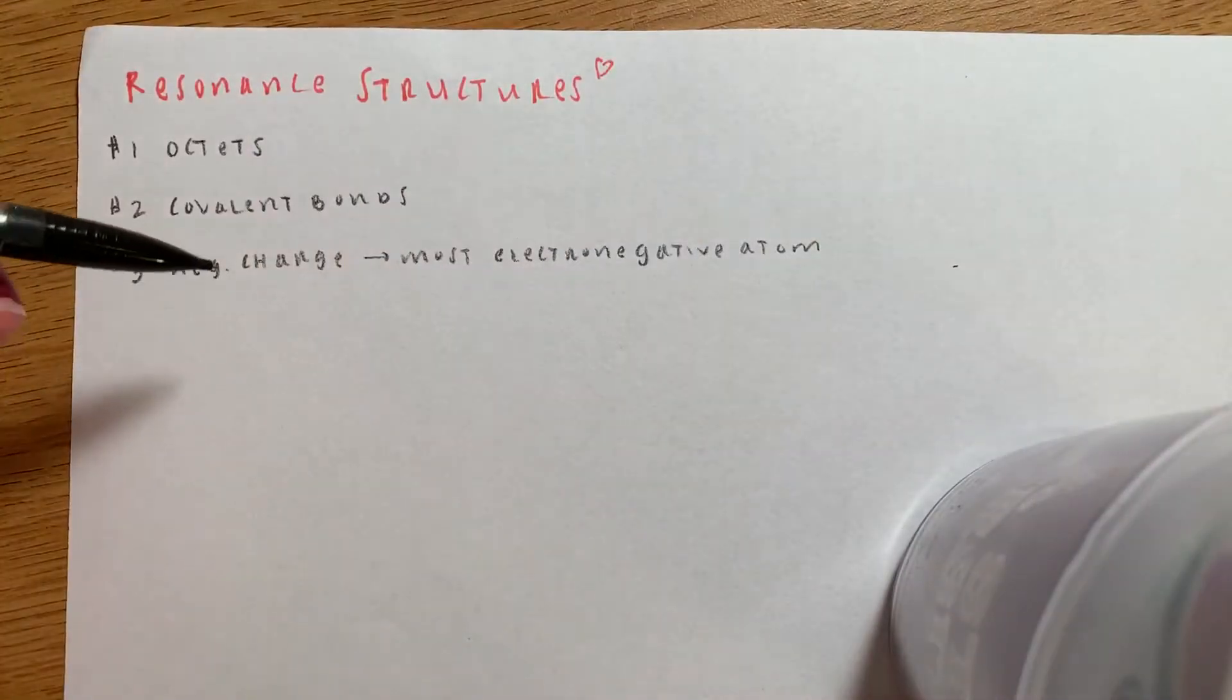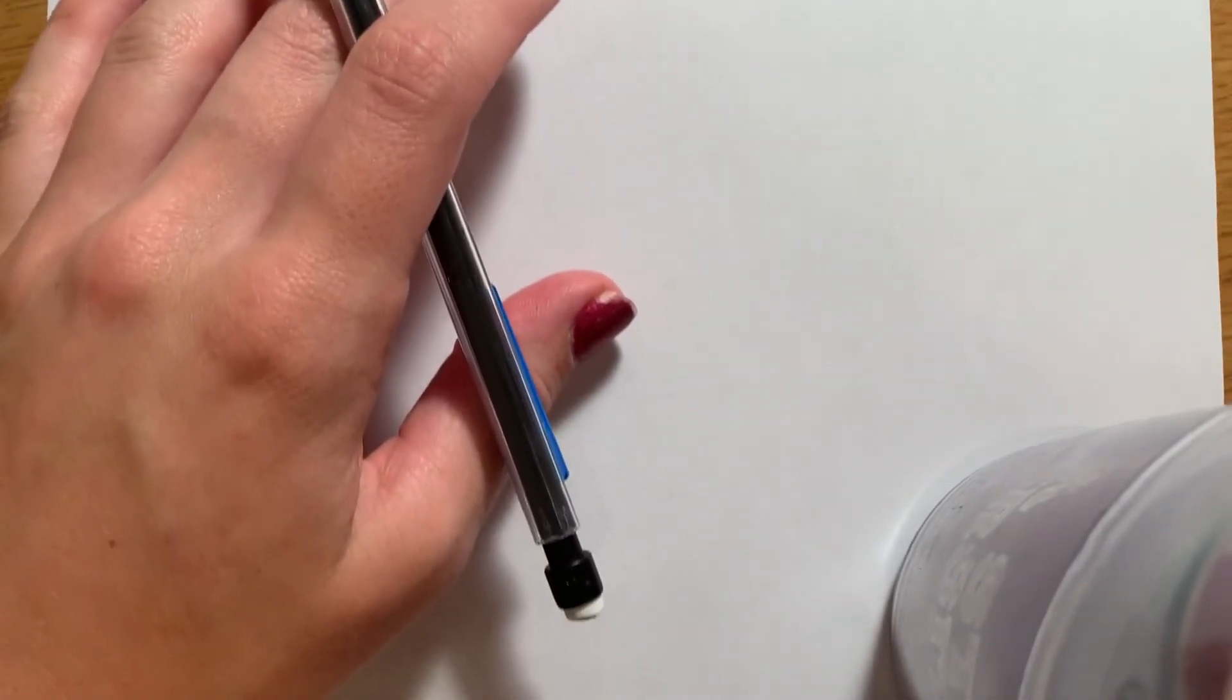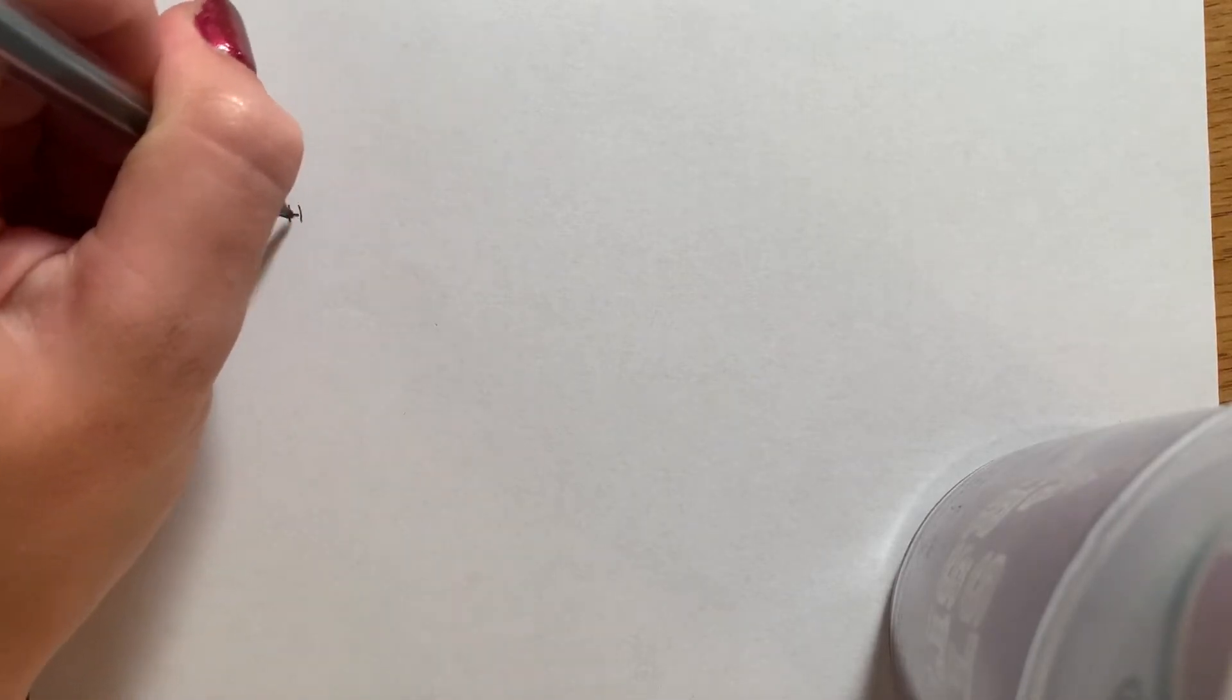So keep this in mind when we're doing our problems and it'll make more sense when we actually see them in action. So first we're going to talk about curved arrows, what they do, what they symbolize, and then make this structure better.